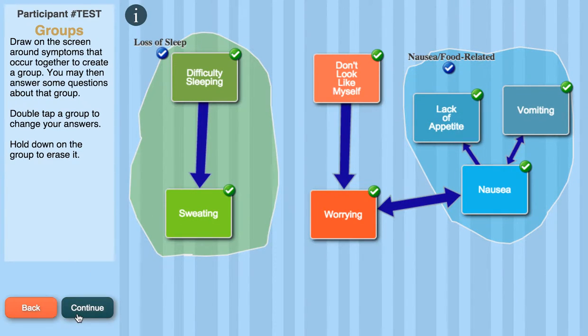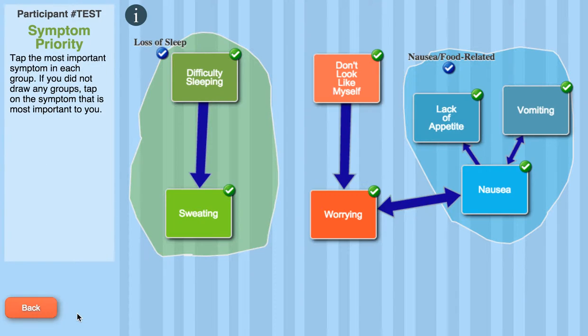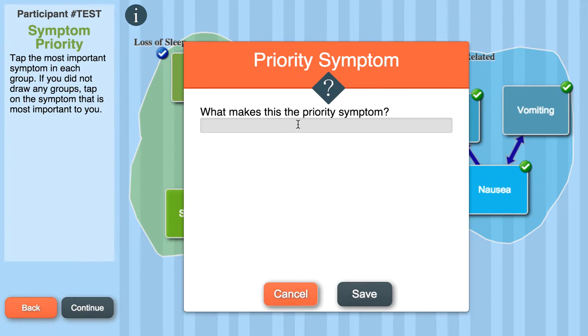Once you've finished, you can click Continue to go on to the Priority page. Here, I can identify which symptoms have been a priority for each group. So, for instance, my sweating has been the most important symptom in my Loss of Sleep group, because it's the most severe.